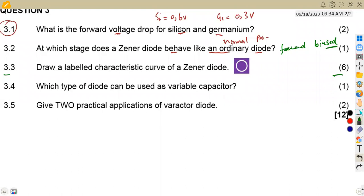For six marks you just need to label properly, that is the major part. On 3.4 we are given which type of diode can be used as a variable capacitor. That is a varactor, so we are dealing with a varactor diode that can be used as a variable capacitor.